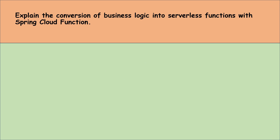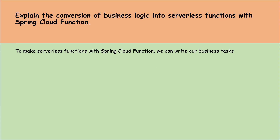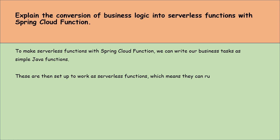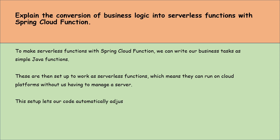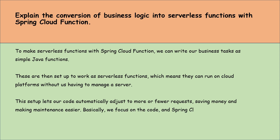Explain the conversion of business logic into serverless functions with Spring Cloud Function. To make serverless functions with Spring Cloud Function, we write our business tasks as simple Java functions. These are then set up to work as serverless functions, which means they can run on cloud platforms without us having to manage a server. This setup lets our code automatically adjust to more or fewer requests, saving money and making maintenance easier. Basically, we focus on the code and Spring Cloud Function handles the rest, making it ready for the cloud.